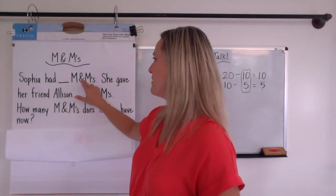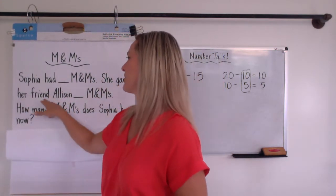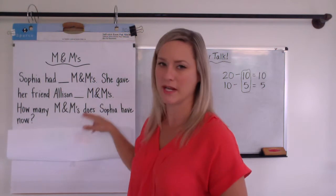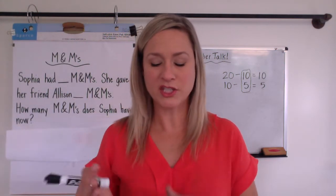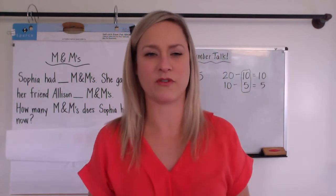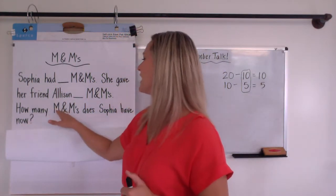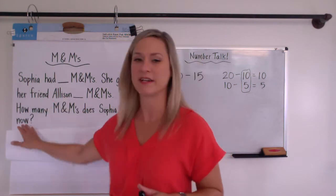So M&M's. Sophia had M&M's. She gave her friend Allison M&M's. All right. So Sophia had some M&M's. Then she's going to give some to her friend Allison. How many M&M's does Sophia have now?